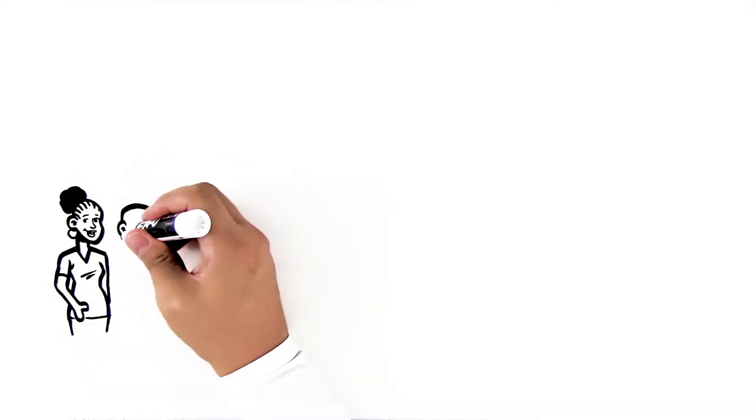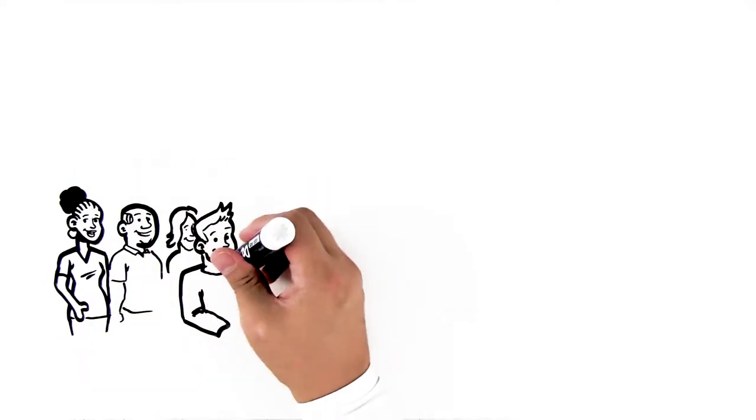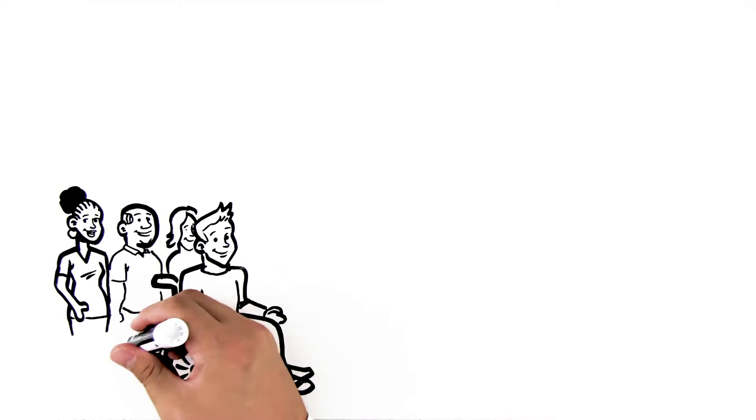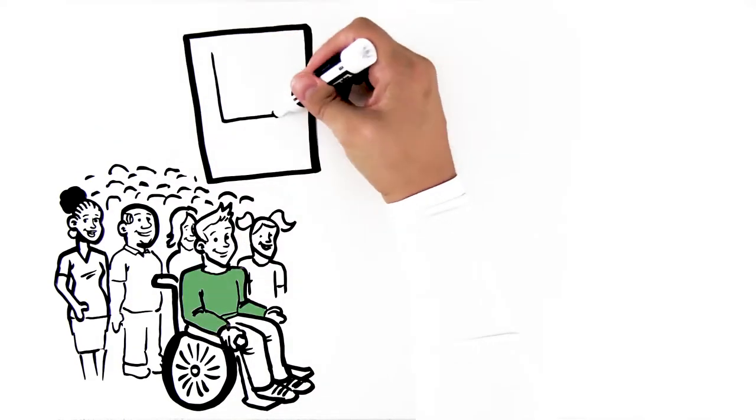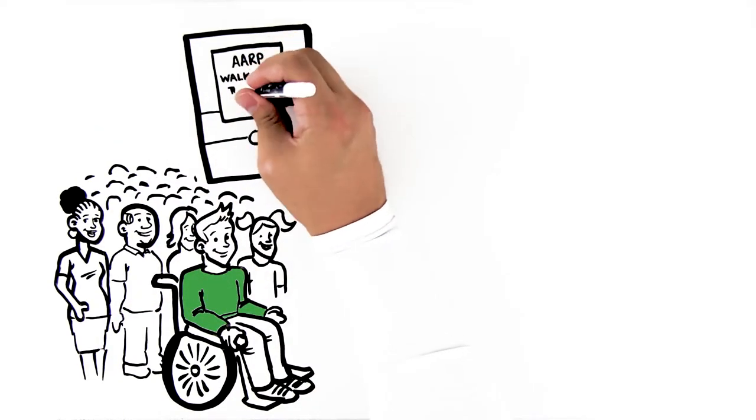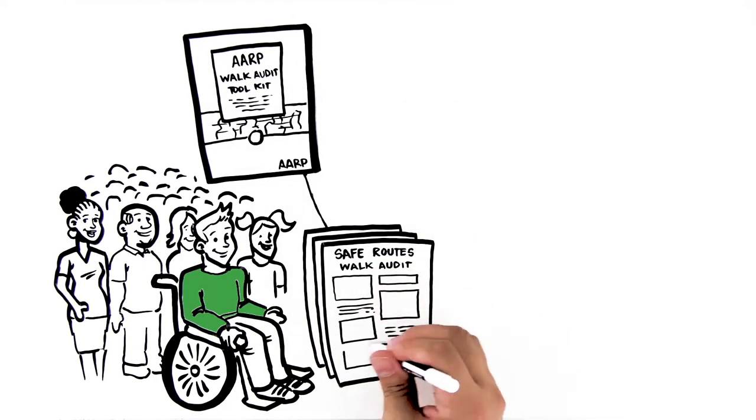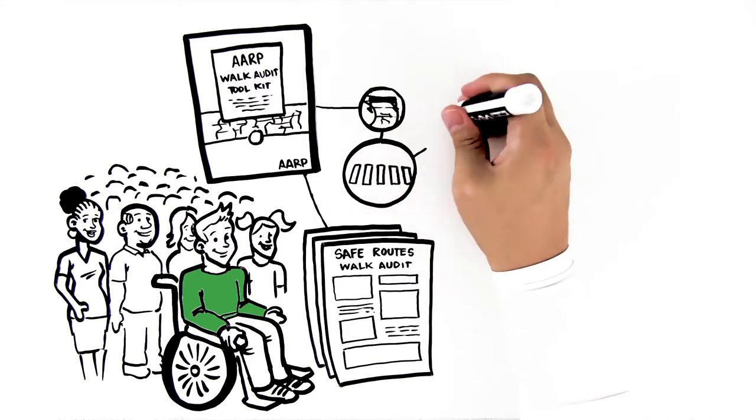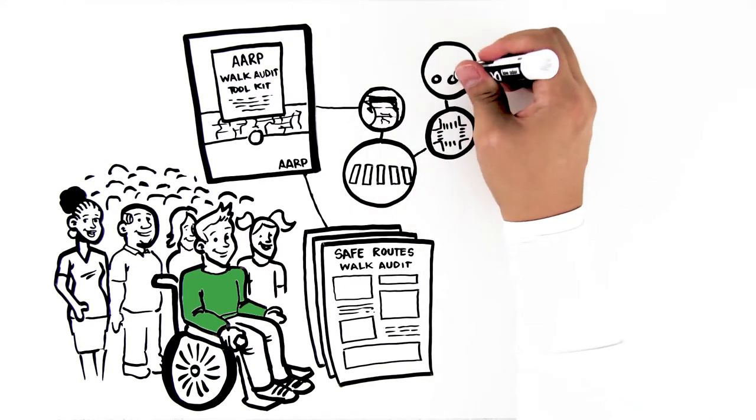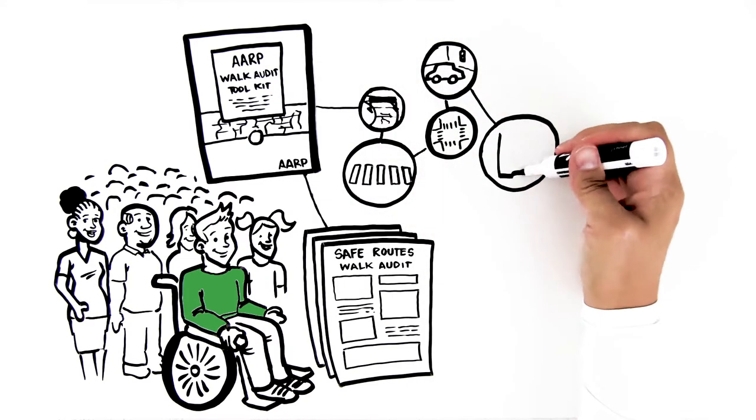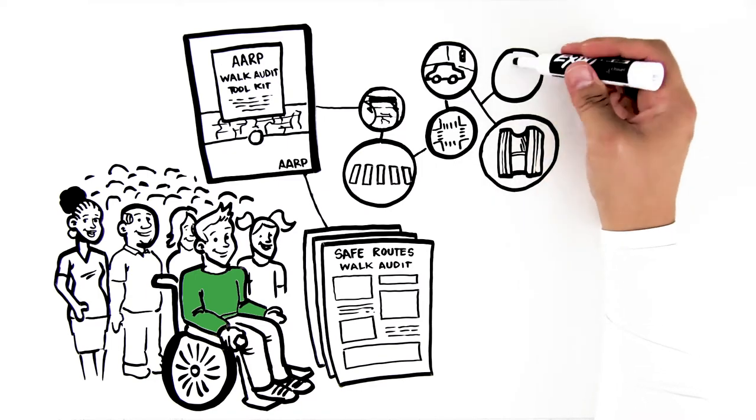Conducting a formal audit with a group requires some preparation. Luckily, there are some great tools that can help, like the free walk audit toolkit which you can download from AARP. It includes ready-made forms for reporting the conditions of sidewalks, crosswalks, intersections, driver behavior, safety, and comfort, and information about the preparations you need to make.